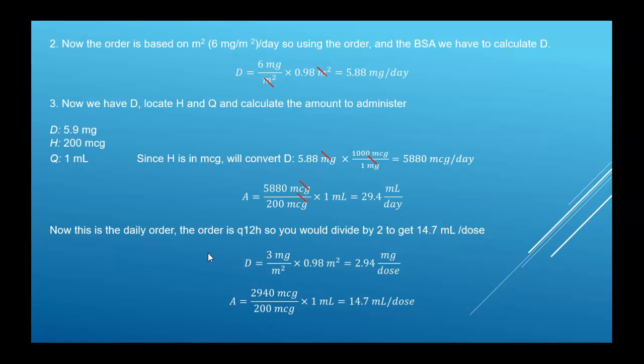So remember you have to pay attention to those little details. It was six milligram per meter squared per day every 12 hours. So we could have split that before our calculations and said okay, that means three milligram per meter squared per dose, which is what I did here. So if I calculate D based on a single dose, it's three milligram per meter squared times our BSA, gives us 2.94 milligrams per dose now. Convert your milligrams to micrograms, 2940 micrograms per dose, over our H 200 micrograms per milliliter, and you end up with the same 14.7 milliliters per dose.